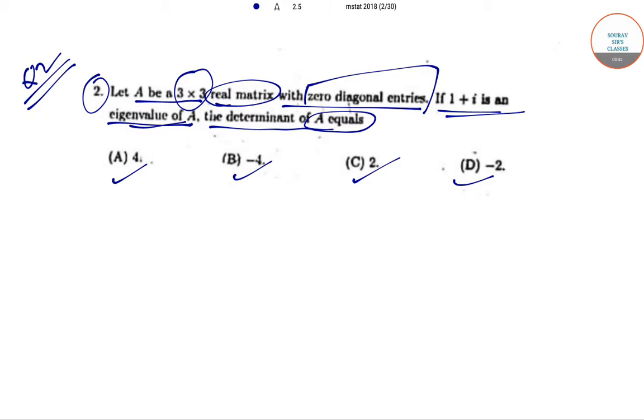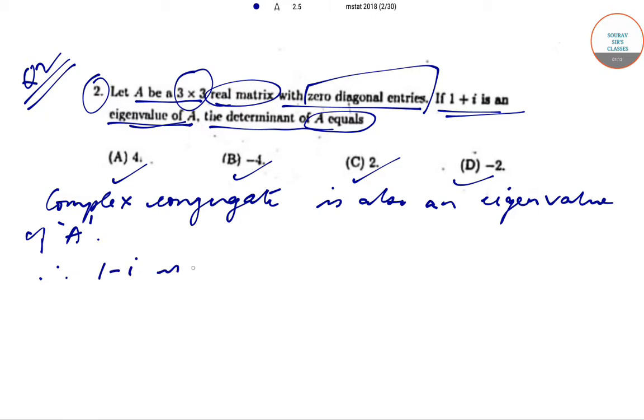Now we know that if 1+i is an eigenvalue of A, then its complex conjugate is also an eigenvalue of A.